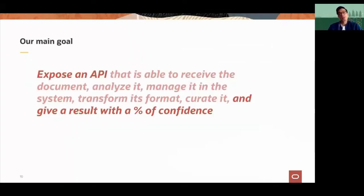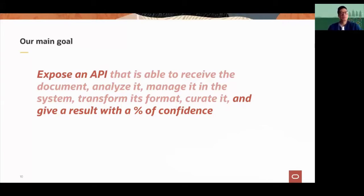Our main goal has always been to offer something to our customers — specifically, to expose a single API that can receive an already scanned document, not only to retrieve information from it, but to classify it, manage the information, insert it into the backend, transform the format if needed, and rotate it if necessary. The API also returns a level of confidence so the customer can realize whether the information retrieved is high or low confidence. The higher the confidence level, the more comfortable the customer feels moving forward with their processes.